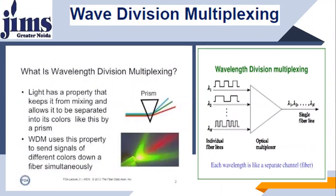Light has a property that keeps different colors from mixing and allows them to be separated — for instance, by a prism. WDM uses this property to send signals of different colors down fibers simultaneously. In Wavelength Division Multiplexing, data from different sources — source 1 at lambda 1, source 2 at lambda 2, up to lambda 9 — are multiplexed with an optical multiplexer and share the same single optical fiber. All data from different sources are transmitted simultaneously, with each lambda sharing the same optical fiber bandwidth.